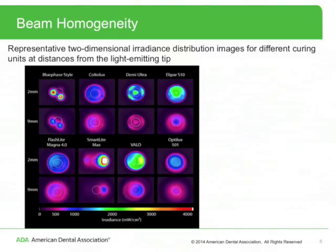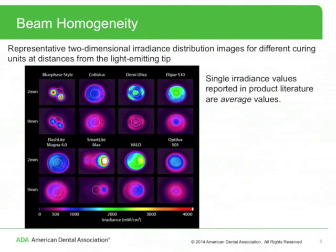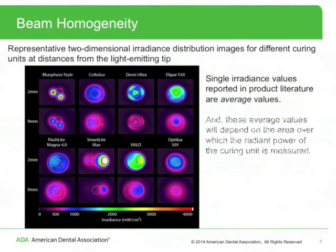It can be seen from the color-coded images that the irradiance distribution varies across the light beam for all LED curing units. For example, some profiles such as the Blue Phase Style and the Smart Light Max range from below 500 milliwatts per centimeter squared to over 4,000 milliwatts per centimeter squared. Single irradiance values reported in product literature are average values, and these average values will depend on the area over which the radiant power of the curing unit is measured.